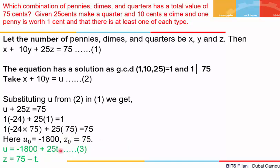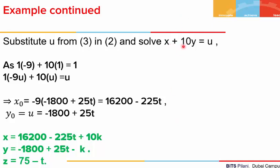We substitute the value of u from equation 3 into equation 2 and solve x + 10y = u. The coefficients 1 and 10 are written as the linear combination of the GCD: 1·(−9) + 10·1 = 1. Multiplying by u gives x₀ = −9u as the initial solution and y₀ = u. So x = −9u = 16200 − 225t, and y₀ = u = −1800 + 25t.